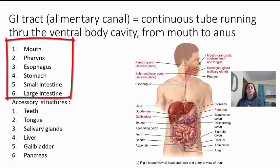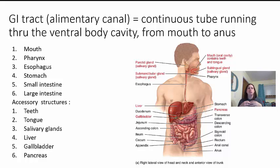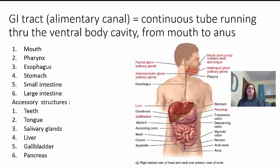We then have some accessory structures that are going to help with the digestive process, like your teeth, your tongue, and your salivary glands — which are all located in the mouth region — the liver, the gallbladder, and the pancreas. From the mouth down to the anus, this can be 5 to 7 meters long. Each meter is about 3 feet, so your digestive system from mouth to anus is anywhere between 15 to 21 feet long — a long structure compacted into a small space. Gastroenterology is the study of the stomach and intestine.